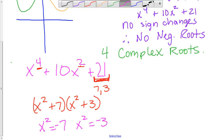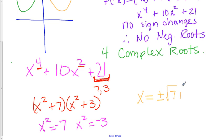Taking the square root of a negative seven would get you x equals plus and minus the square root of seven i. And taking the square root of a negative three would get you x equals plus and minus the square root of three i. And now we have our four roots.